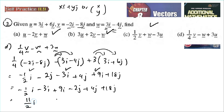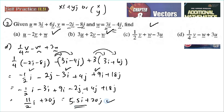So we get 11 over 2 i, and for j: negative 2 plus 4 gives 2, then 2 plus 18 gives 20j. The answer is 11 over 2 i plus 20j, which is also equal to 5.5i plus 20j. I showed two methods — a and d use i/j notation, b and c use column vector notation — but you get the same answer either way. You can choose whichever method you prefer.